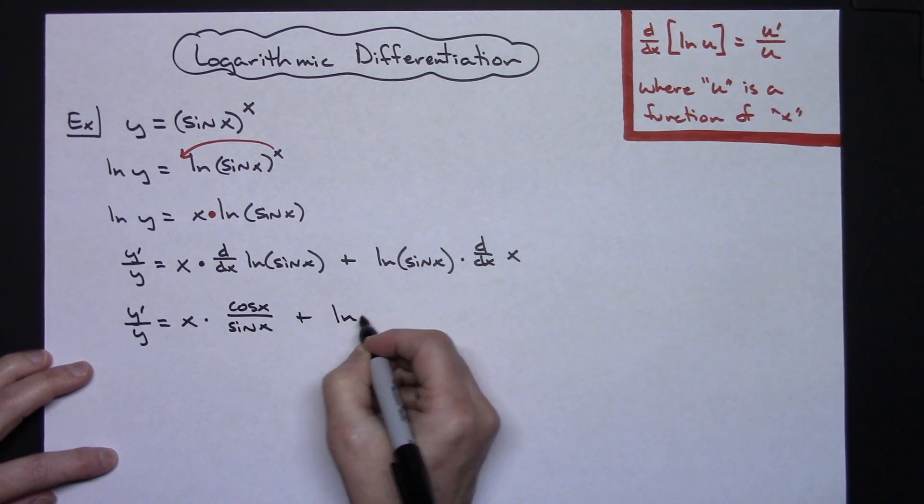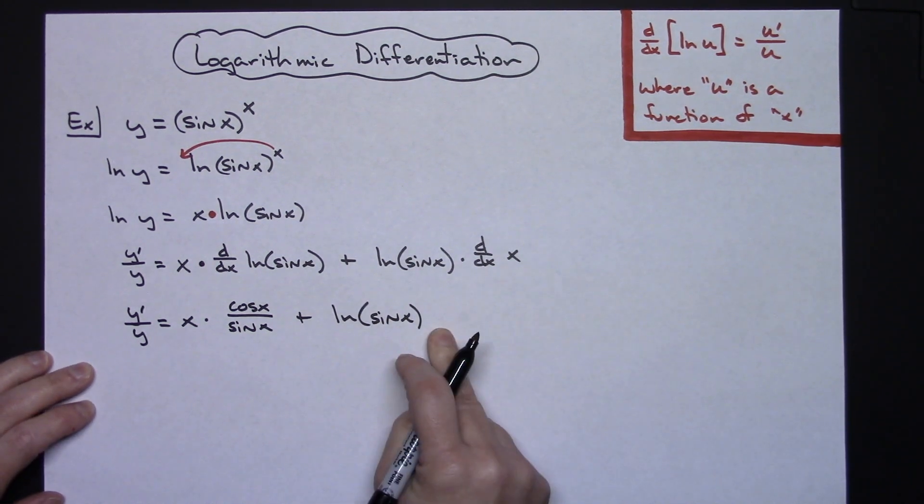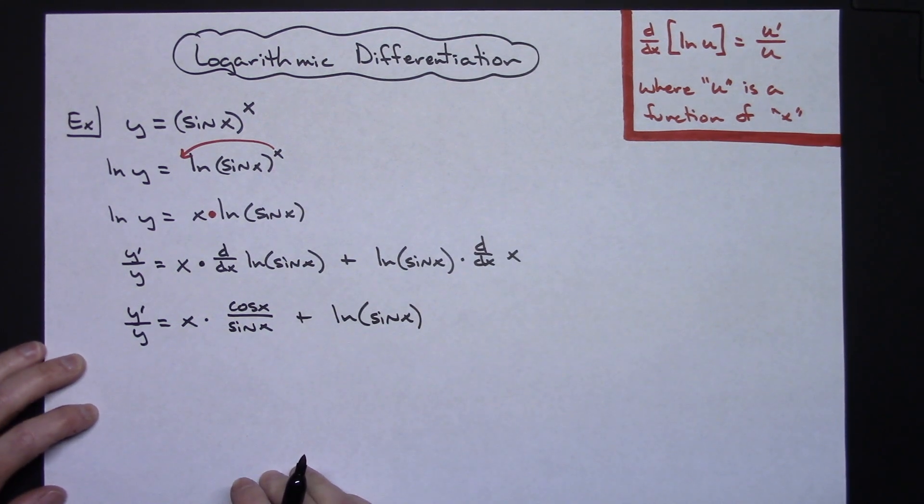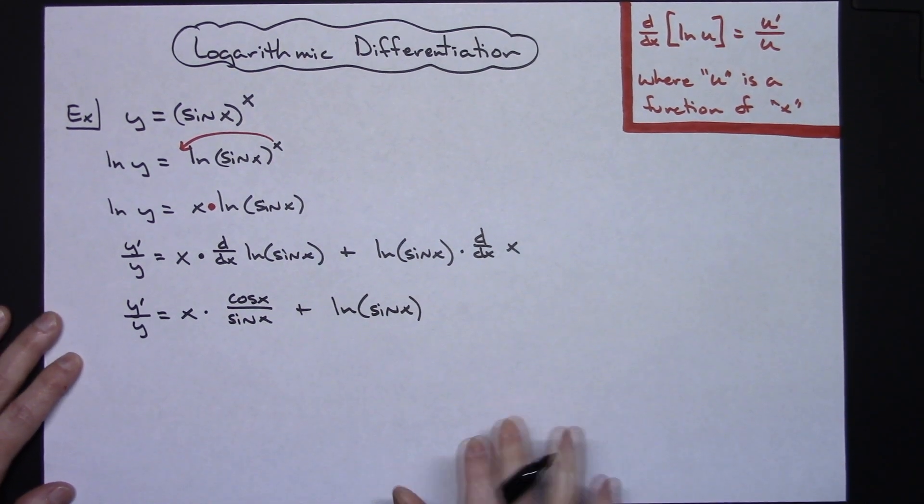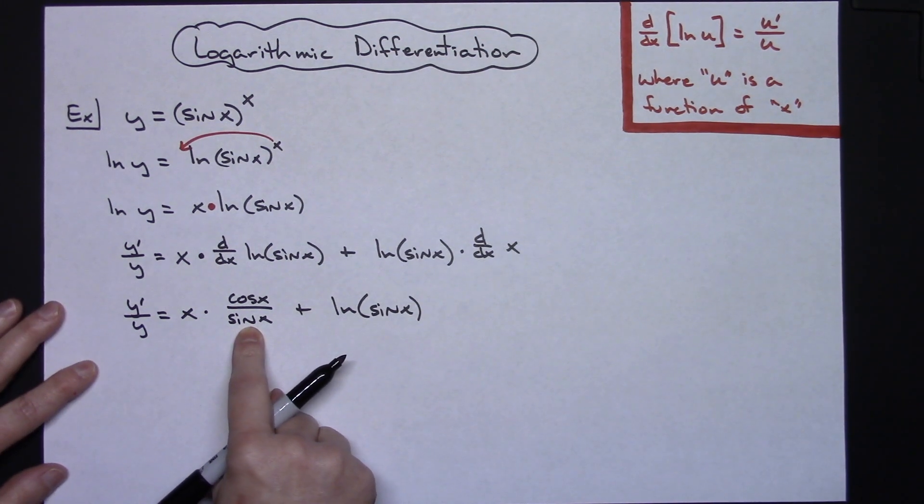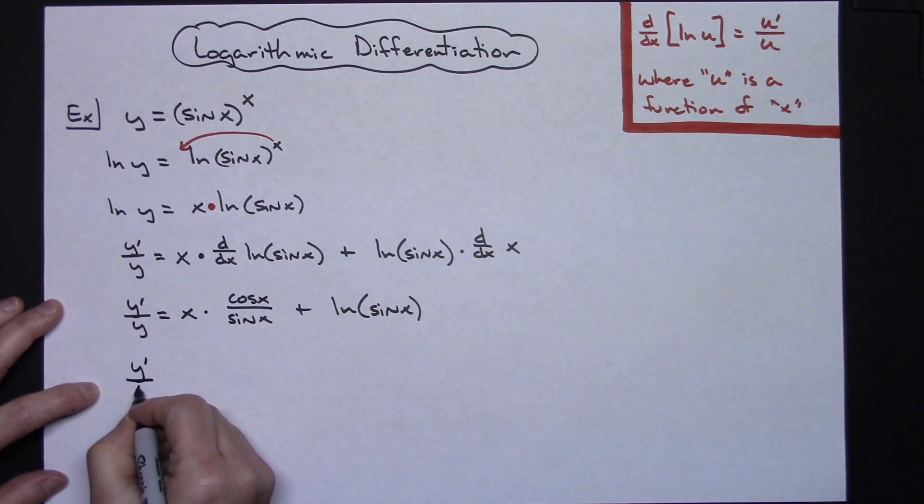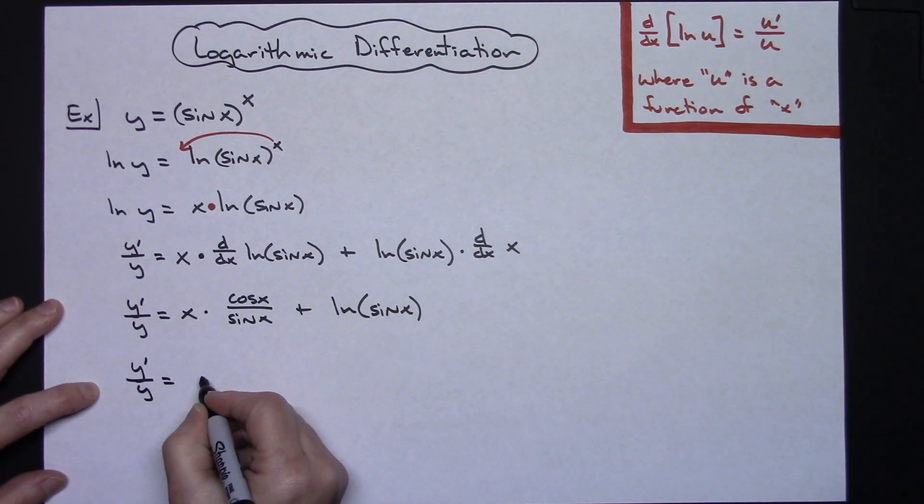Then I'll have the natural log sine x right there. Taking the derivative of x will just be one. Now I'm going to change this out - you got to be really good at this point with your trig identities, so this is going to be cotangent.